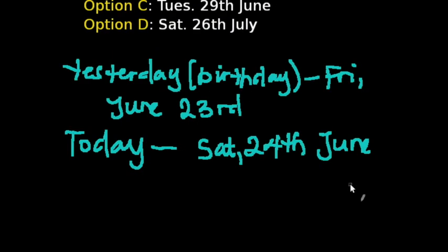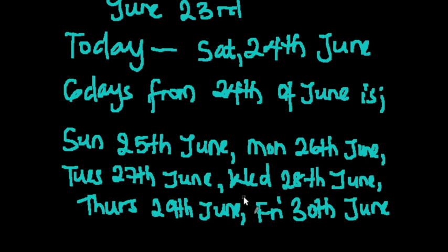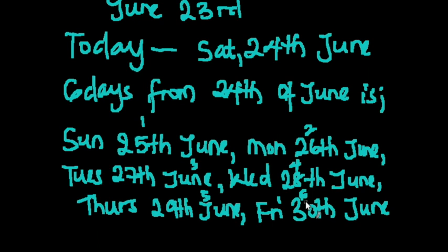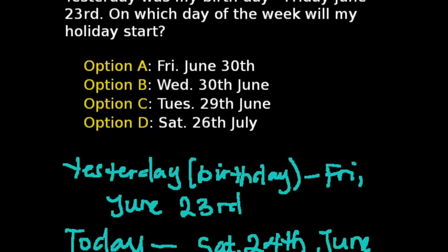Six days from 24th June: Sunday 25th June, Monday 26th June, Tuesday 27th June, Wednesday 28th June, Thursday 29th June, and Friday 30th June. Counting them out — one, two, three, four, five, six — six days after 24th June is Friday 30th June. So the correct answer is Friday June 30th, Option A.